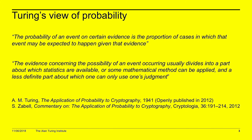I recommend everybody interested in Turing's work, probability, and cryptography read this paper — it's available on arXiv in PDF format. I've extracted two quotes from it suggesting Turing himself was a Bayesian statistician. He said: 'The probability of an event given certain evidence is the proportion of cases in which that event may be expected to happen given that evidence.' The key word is 'given that evidence' — Turing was thinking about conditioning on evidence and a latent space over which to determine a probability distribution.